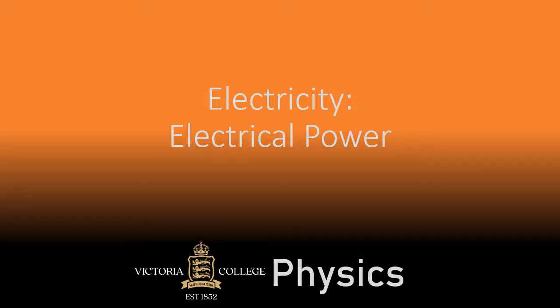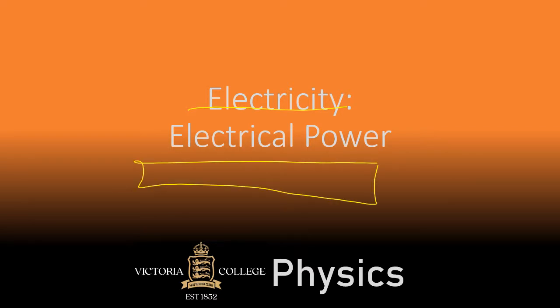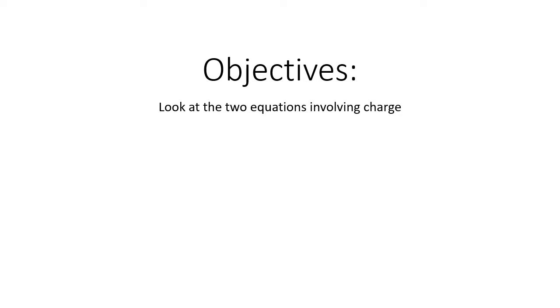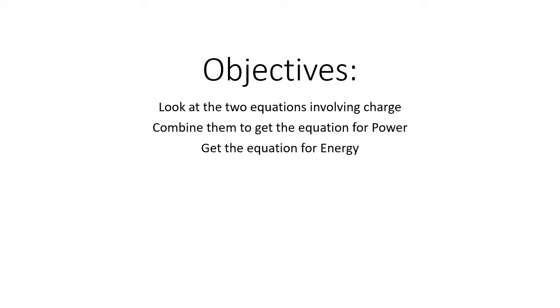This talk is part of our GCSE electricity series, specifically looking at electrical power. The plan for this video is to look at the two equations which involve charge — charge equals current times time, and PD equals energy divided by charge — then combine the two to get the equation for electrical power, and also look at electrical energy.